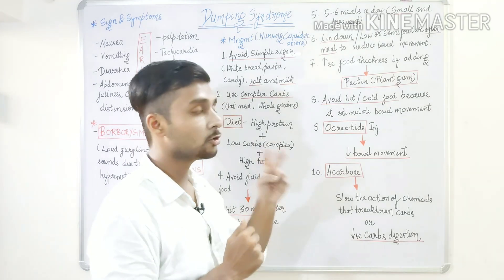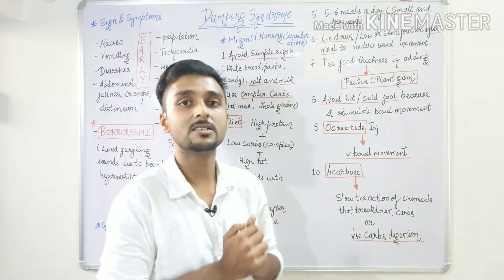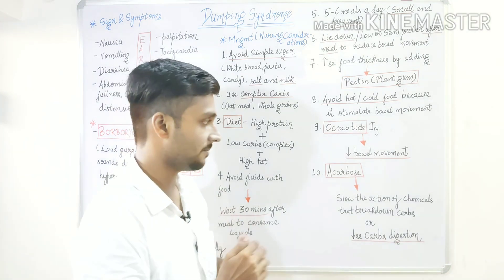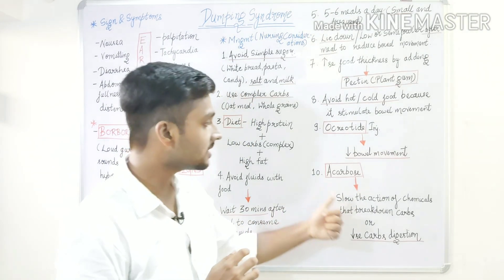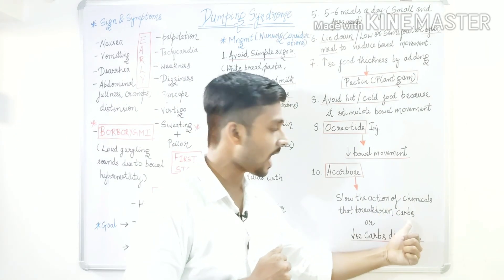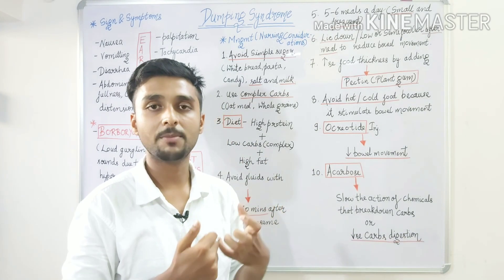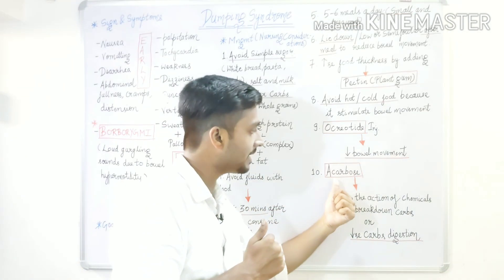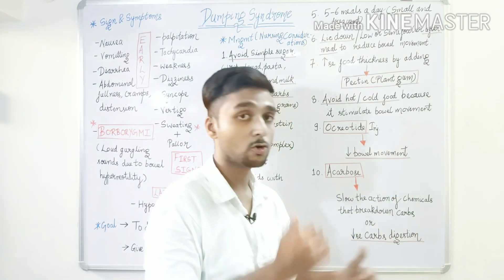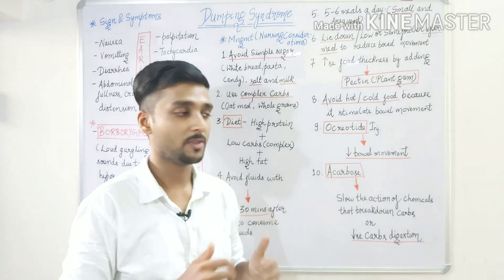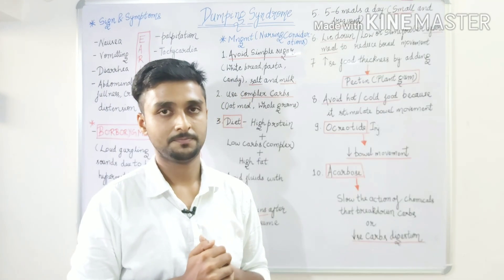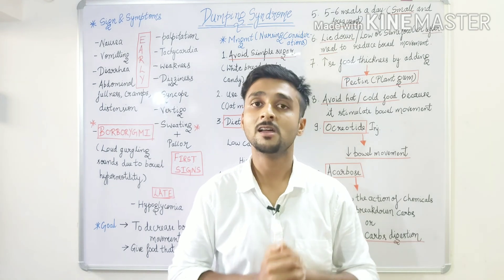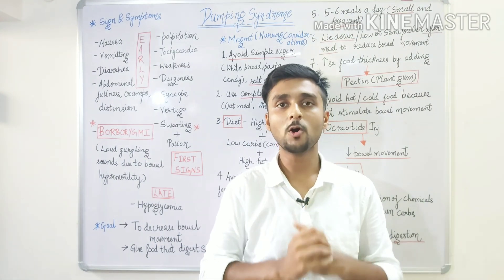Regarding medications, two are important. First, octreotide injections — these decrease bowel movement so that food passes slowly into the small intestine. Second, acarbose — this slows the action of chemicals that break down carbohydrates to glucose, so glucose levels in the intestine increase slowly. It essentially decreases carbohydrate digestion speed. In this way, we can manage dumping syndrome and provide nursing care to the patient. That is all about dumping syndrome — hope you all liked and understood it well.